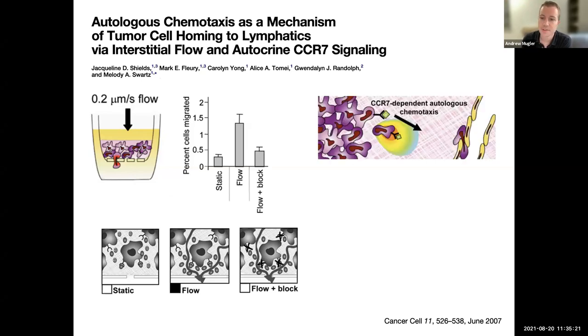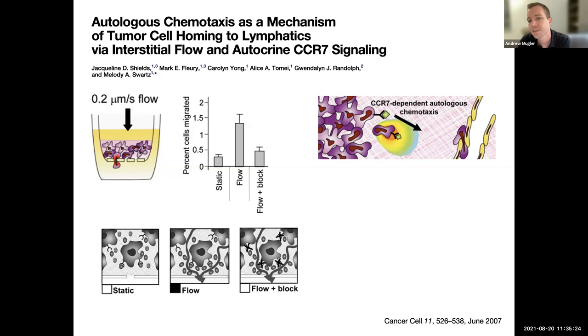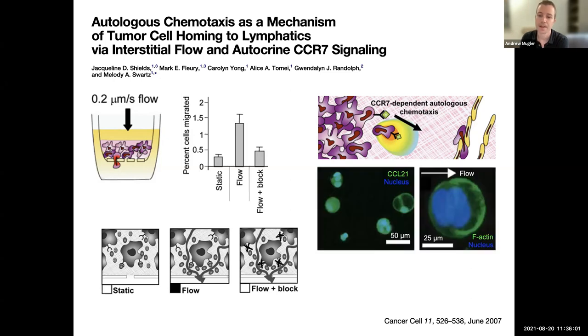And this is a receptor called CCR7 that is actually cognate to a ligand that the cell itself secretes. And so, that led to a proposal whereby the cell is essentially creating its own guidance cue. It's secreting molecules into the environment. That creates sort of a diffusive cloud. The cloud gets biased by the flow and it's detecting those very same molecules. And because of the bias, it's detecting more molecules at the front of the cell than the back of the cell, where the front is defined by the flow direction here. So, they turned to this autologous chemotaxis because it's a chemotaxis to a signal provided by the cell itself.